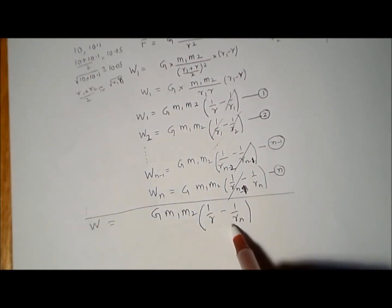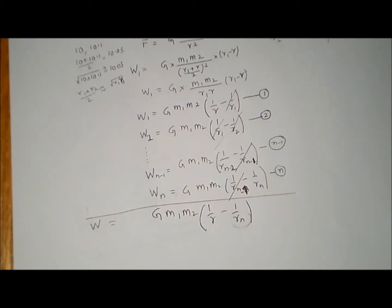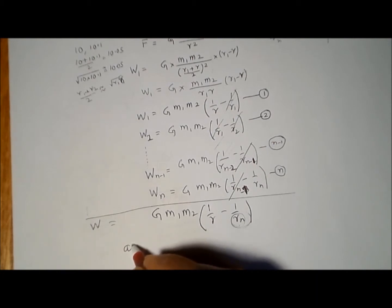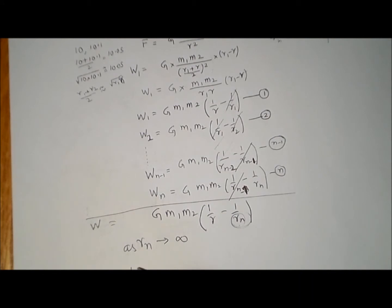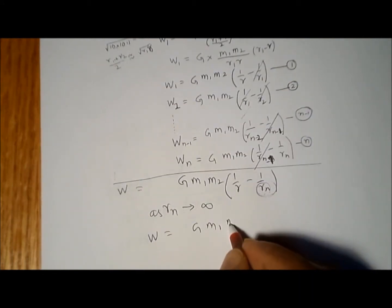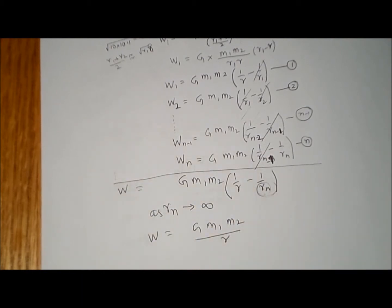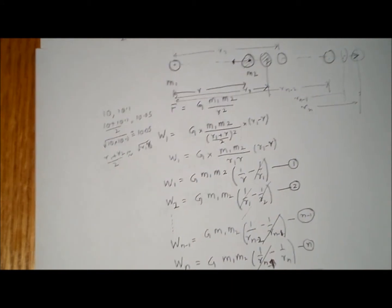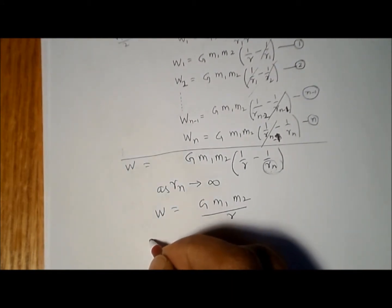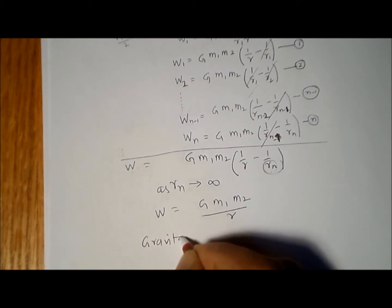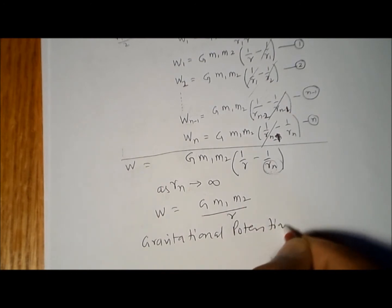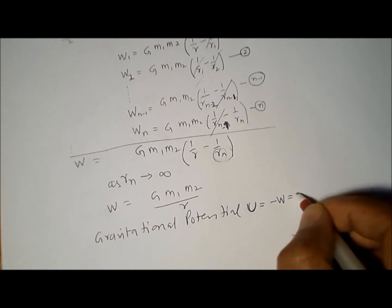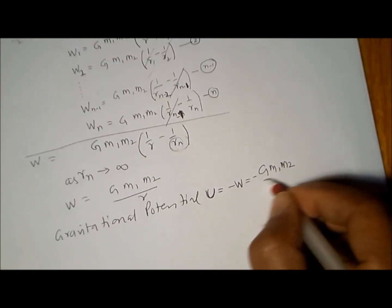Now we make Rn tend to infinity — a very large number. When Rn is very large, 1/Rn equals zero. So as Rn → ∞, the total work W = G·M1·M2 / R. That is the work required to move mass M2 from position R to infinity. The gravitational potential energy U is defined as negative of this work, so U = −G·M1·M2 / R.